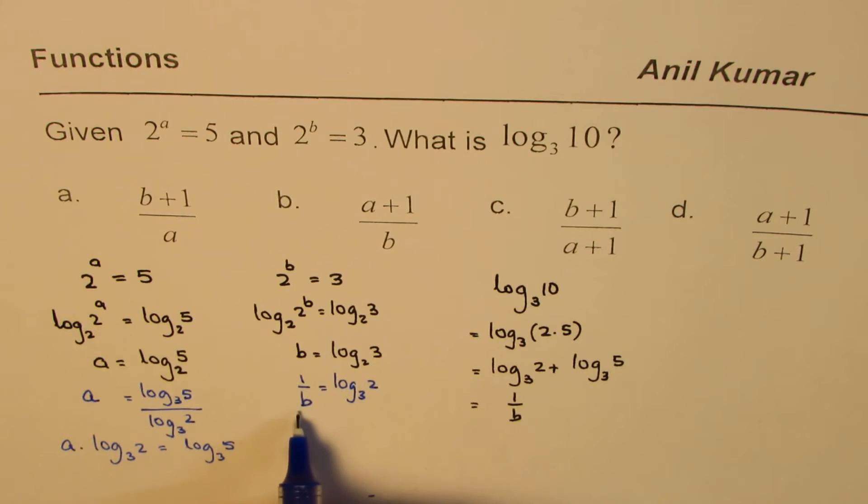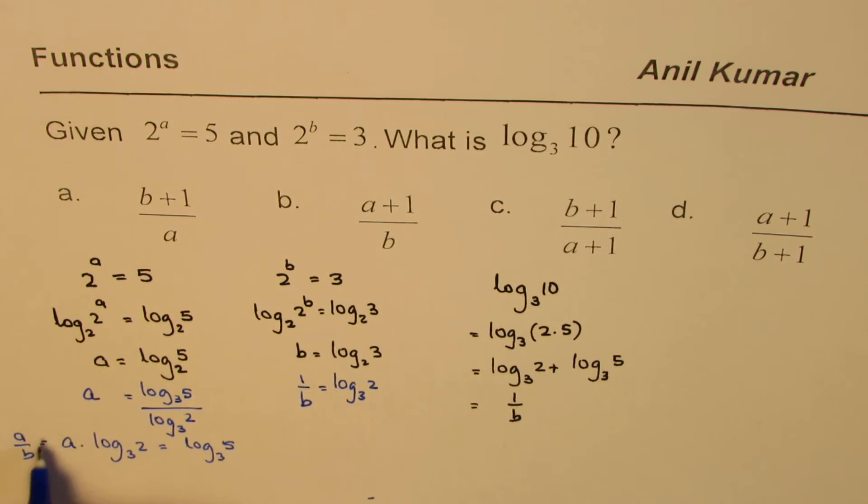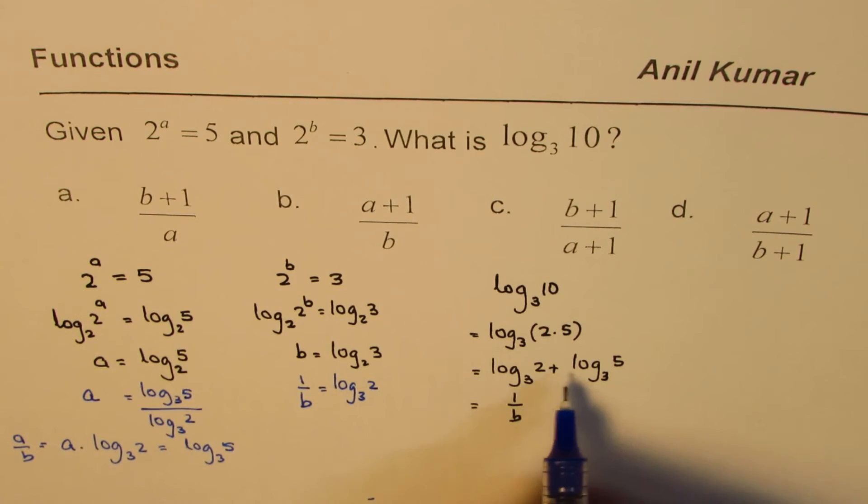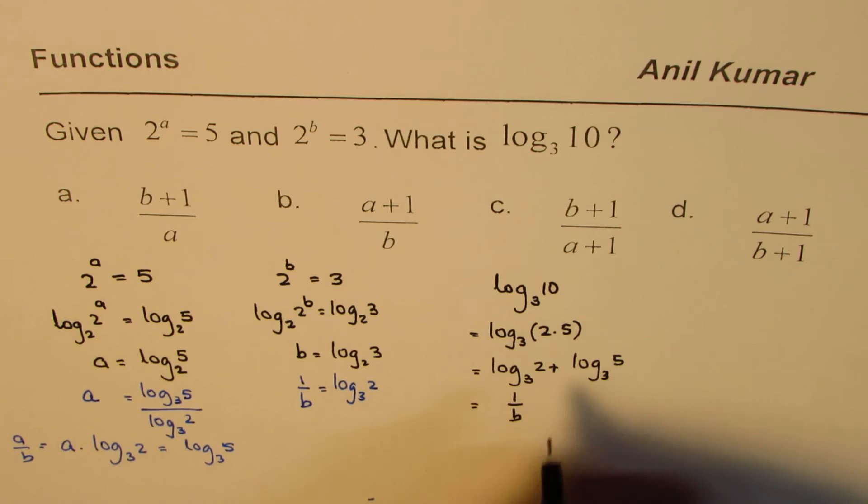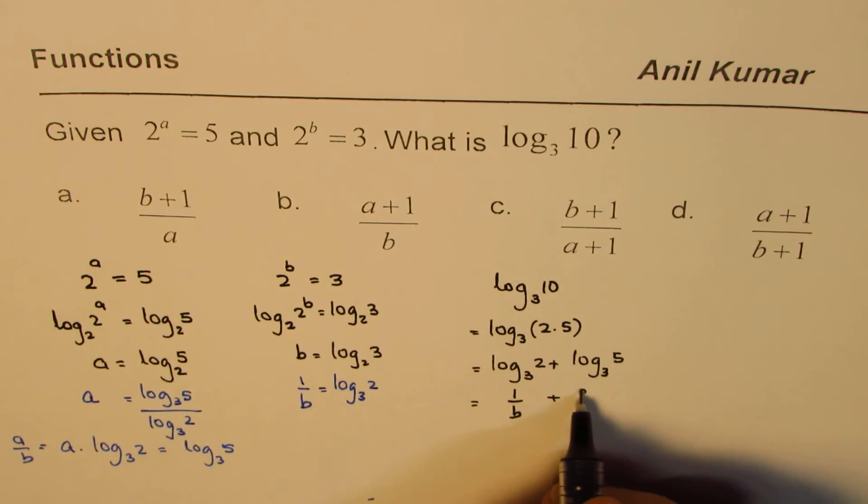Now log base 3 of 2 is 1 over b. So we could write this as a over b. So I could replace log to the base 3 of 5 as equal to a over b.